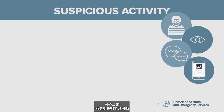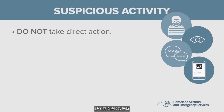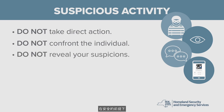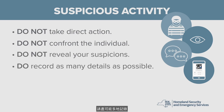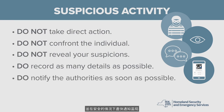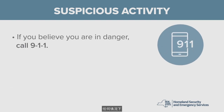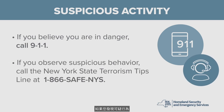If you see suspicious activity, do not take direct action. Do not confront the individual and do not reveal your suspicions. If it is safe to do so, record as many details as possible about the individual and their activity and notify authorities as soon as it is safe to do so. If you have a smartphone, download the See Something, Send Something app from New York State. In any circumstance, if you believe you are in immediate danger, call 911. If you observe suspicious behavior, call the New York State Terrorism Tips Line at 1-866-SAFE-NYS.